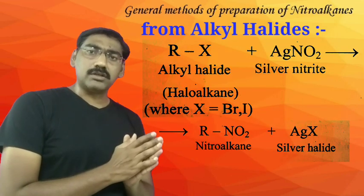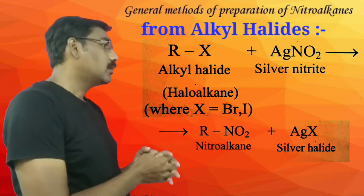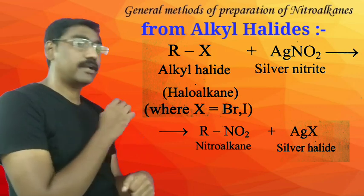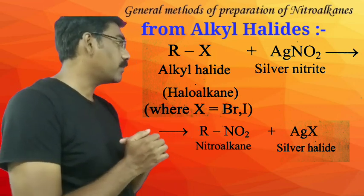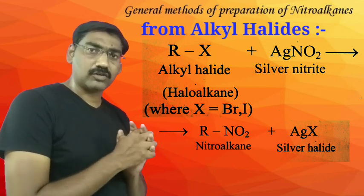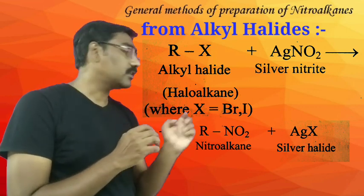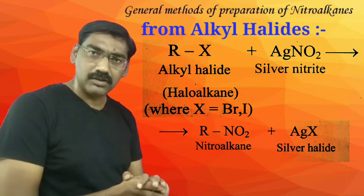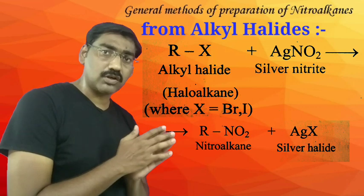The general reaction for preparation of nitro alkanes from alkyl halides: an alkyl halide (R-X, especially bromide or iodide) reacts with silver nitrite (AgNO2), forming R-NO2, that is a nitro alkane, along with silver halide (AgX). This is the general chemical equation.